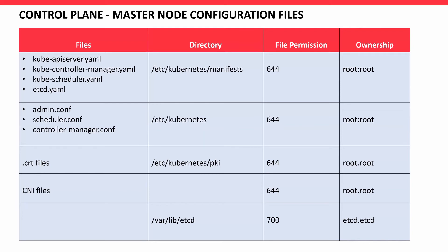CIS provides a large document, which has been organized into a tabular format here. The files under /etc/kubernetes/manifests should be owned by root with file permission 644. This includes kube-apiserver, kube-controller-manager, scheduler, and etcd. Configuration files such as admin.conf, scheduler, and controller-manager should have 644 with root privilege. The PKI files and CNI files should also have 644. The etcd folder under /var/lib should have 644-700 with owner etcd.